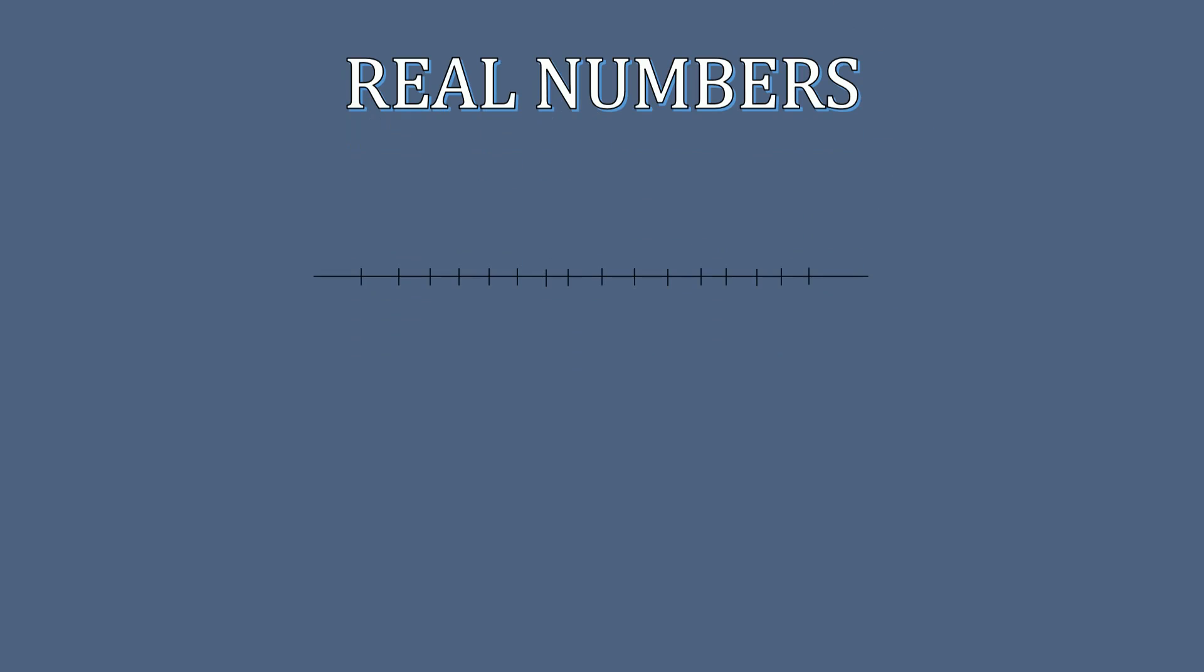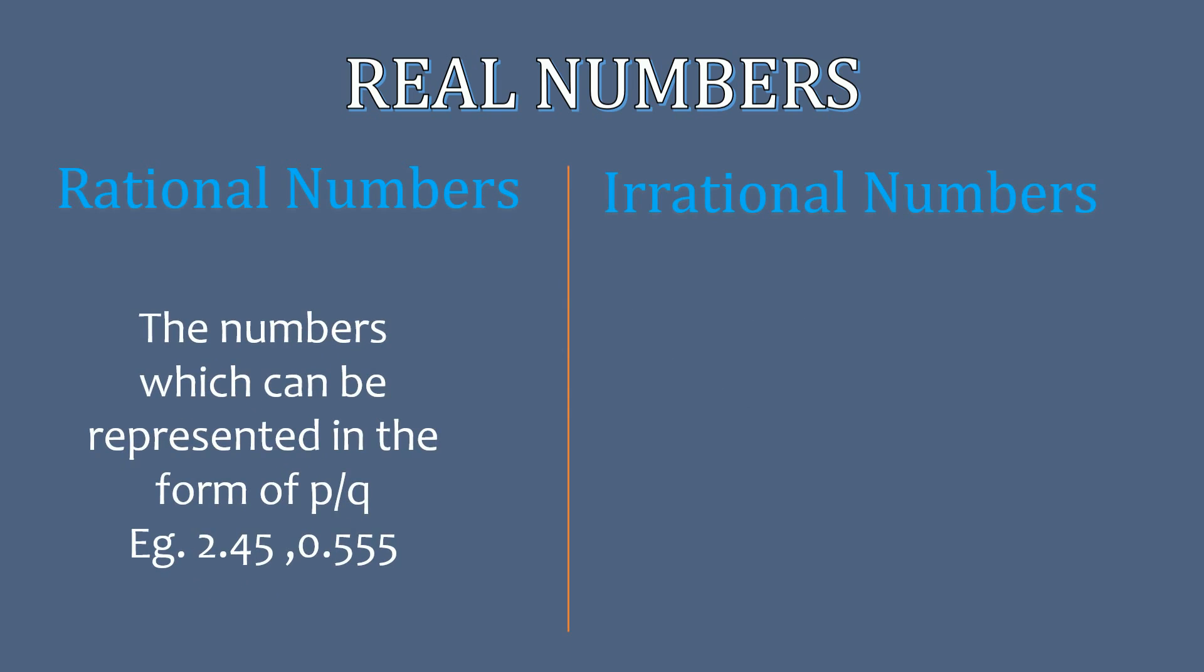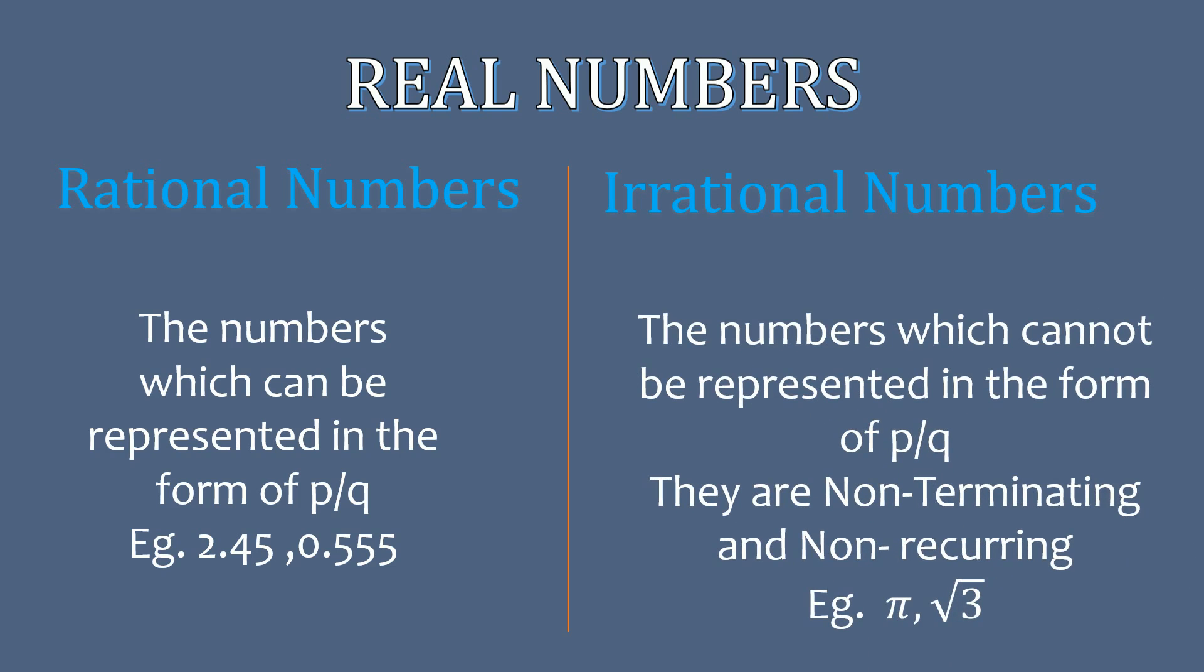We already know what real numbers are. These are the numbers that can be represented on the number line. Real numbers can be broadly classified as rational numbers and irrational numbers. Rational numbers are those that can be represented as a ratio of two integers with no common factor. Irrational numbers, on the other hand, cannot be expressed as a ratio of two integers, and when expressed in decimal notation, they are non-terminating and non-recurring decimals.